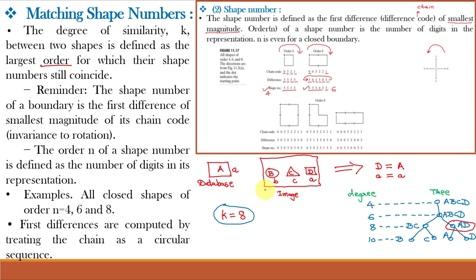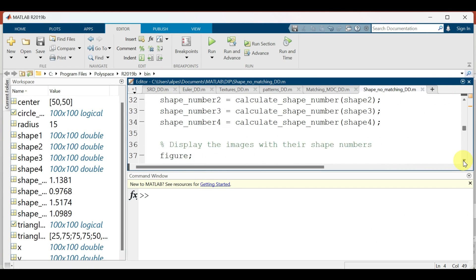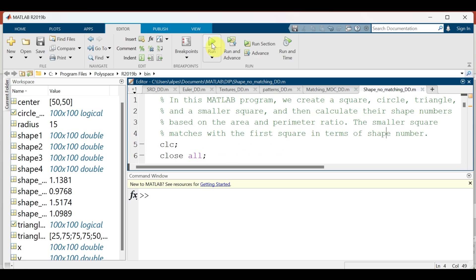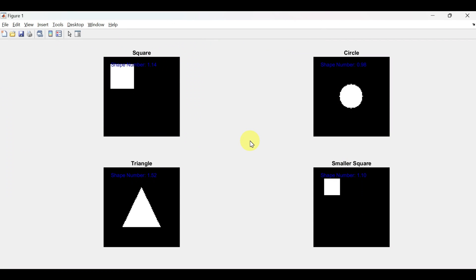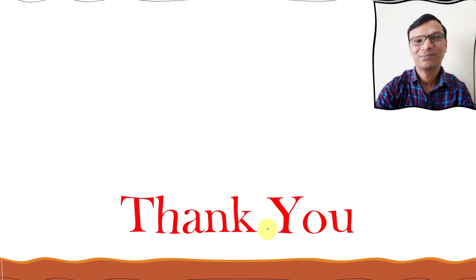At the end, let us implement this shape number matching in MATLAB. With this, we complete our chapter on object recognition. You can find the link to download the PPTs or class notes in the description box, and the MATLAB code is also given in the description box. Thank you very much.